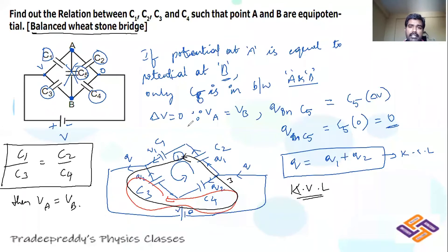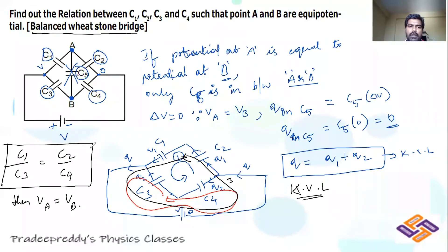If this condition is not satisfied — potential at A and potential at B are not equal — then there will be some charge flowing through C5 as well, and you cannot eliminate C5. To check whether the bridge is balanced: if the ratio of capacitors is equal, bridge is balanced; if bridge is balanced, C1-C2 become series, C3-C4 become series, overall become parallel. If C1/C3 ≠ C2/C4, bridge is unbalanced.